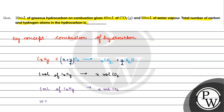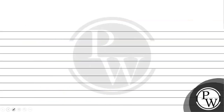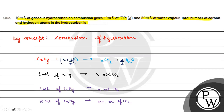For 10 ml of hydrocarbon, we get 10x ml of CO2. This quantity is 40 ml, so x equals 4.